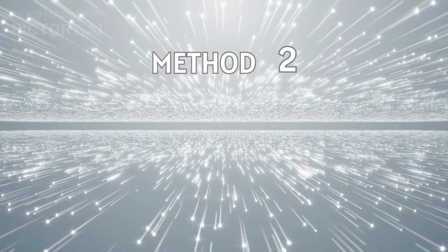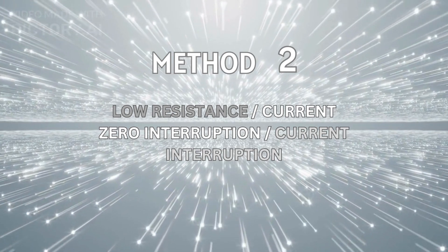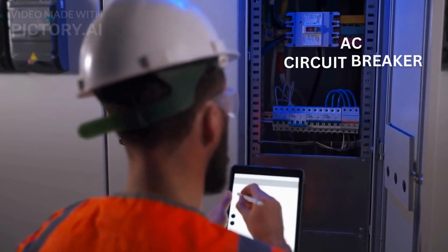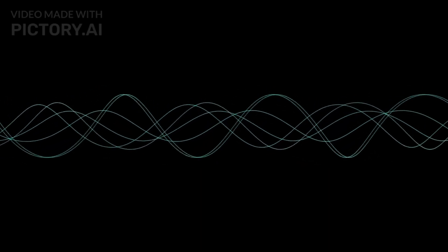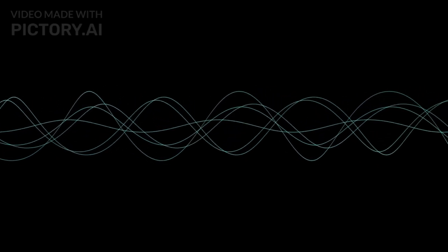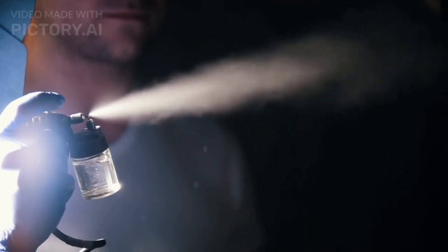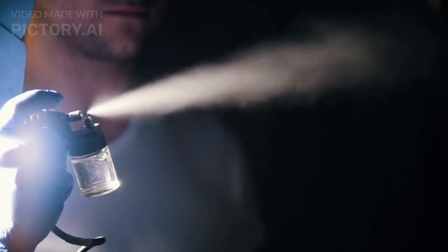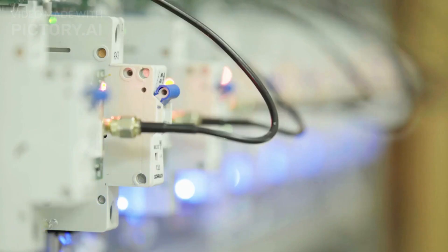The second method of arc interruption is the low resistance or current zero interruption method, used for AC circuit breakers. The alternating current of 50 Hz frequency crosses zero 100 times per second. At every zero crossing, the arc current is zero and is again established. Thus the arc restrikes when the current is near zero crossing. A dielectric medium — in the form of air, SF6 gas, etc. — is introduced near the contacts, causing de-ionization and extinguishing the arc. The current zero instant is determined by using a suitable electronic circuit.